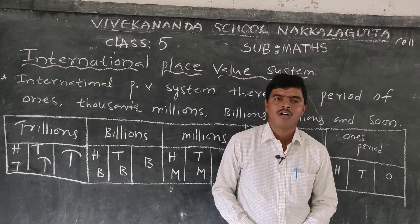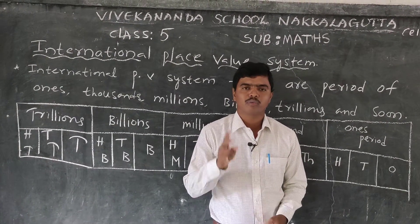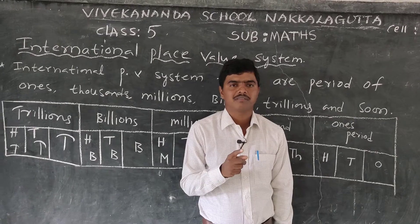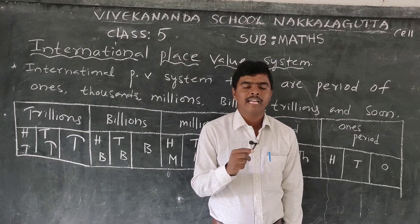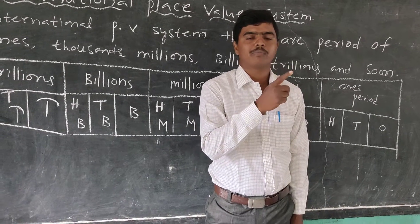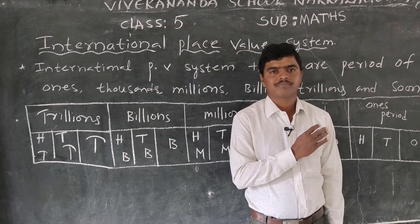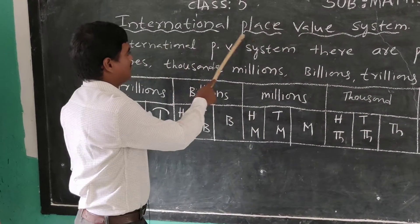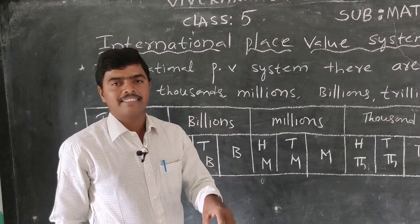Good morning, my dear students. In the last video we covered place value systems. The place value system is divided into two types: first, the Indian place value system or Hindu-Arabic numeration; second, the international place value system or British system. Today's topic is the international place value system.